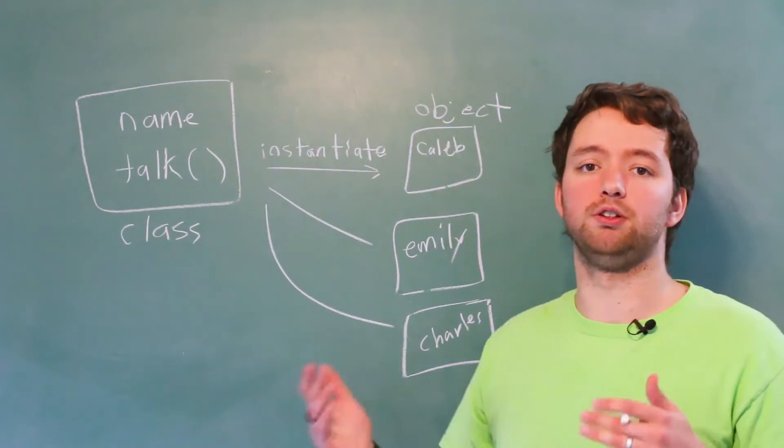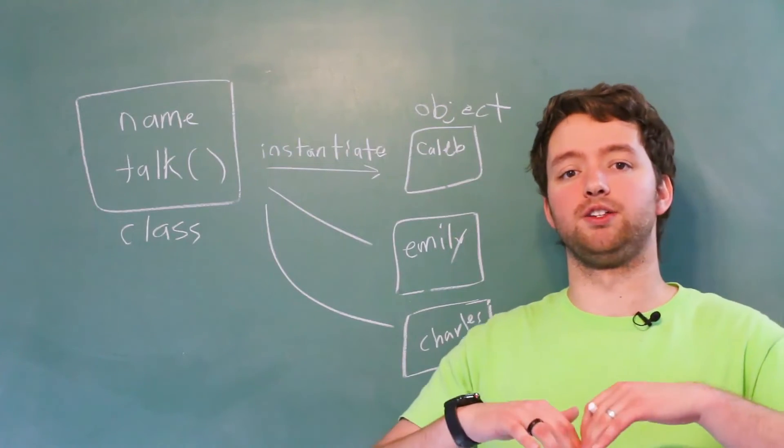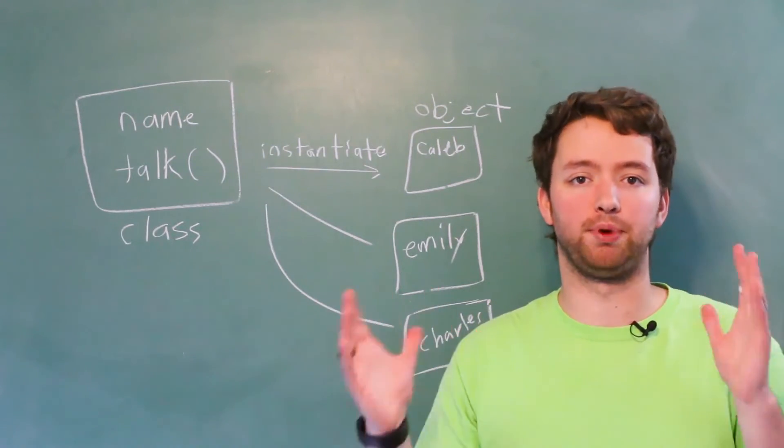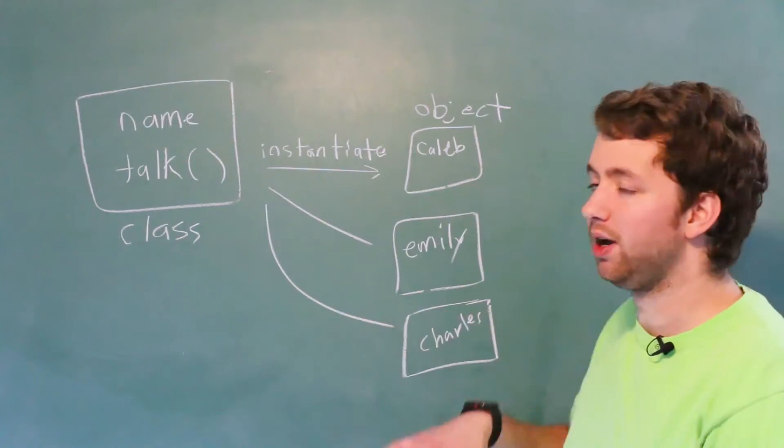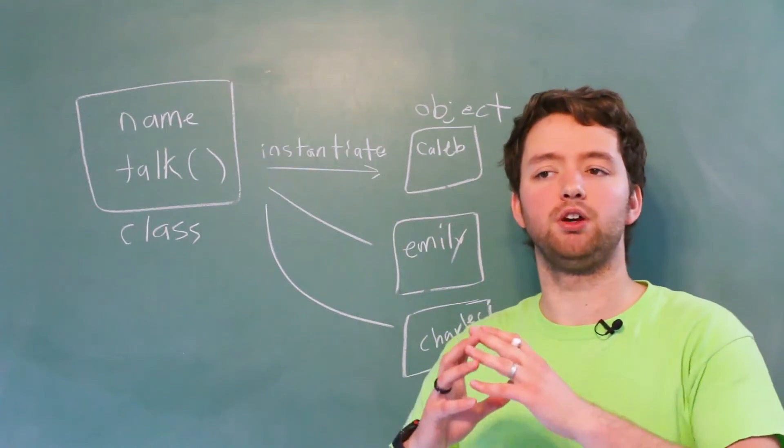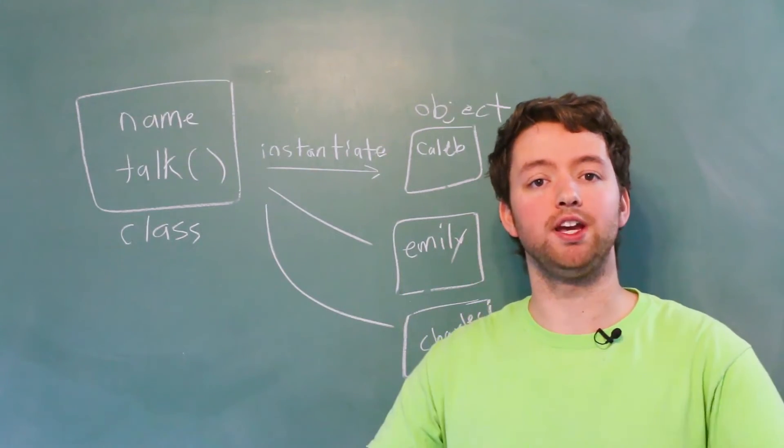And this might seem weird at first, but literally everything inside of Java is going to be based around this object-oriented programming paradigm. So a user might be a very big object, but we can go down very small. Even a string is an object.